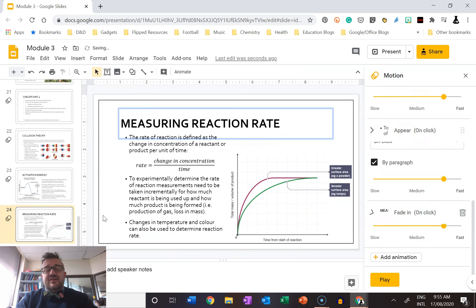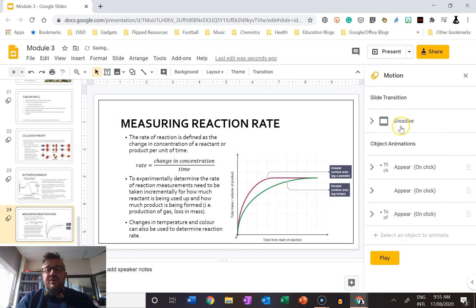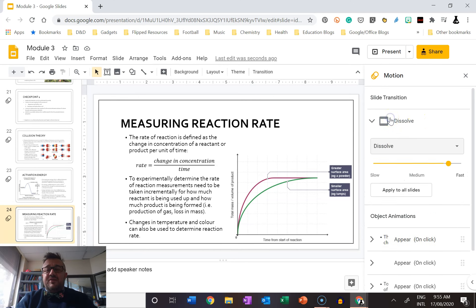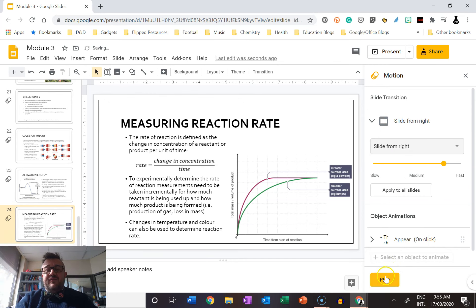Now the slight problem is that it has made this an animation and I don't want that, so I'm going to get rid of that. But it allows me then to move into this section up here. So for example, I might want to move from dissolve to slide from right—that'd be fun.